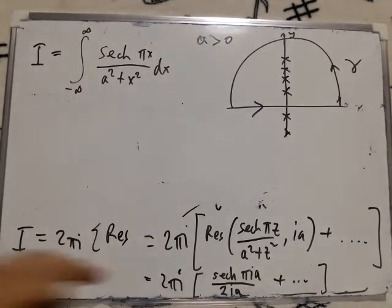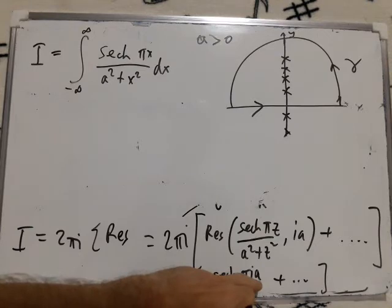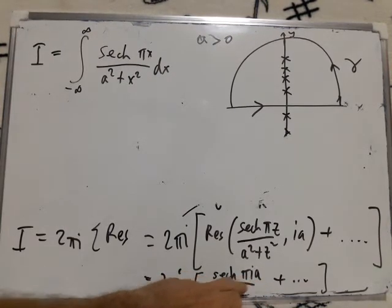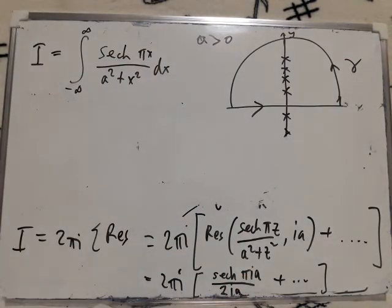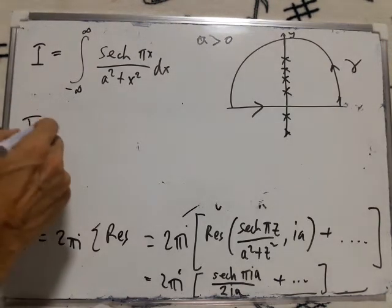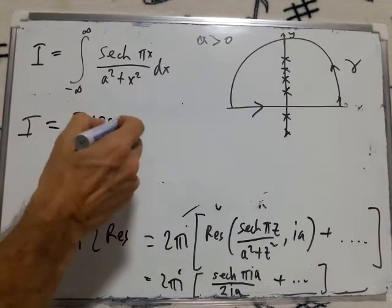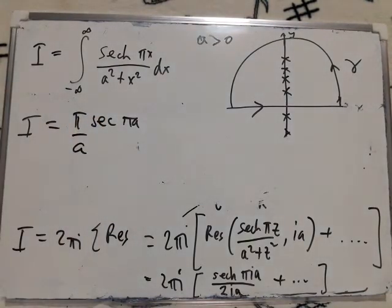Using p over q dashed, we'll end up with sech of πia over 2ia, plus dot dot dot. So the two i cancels with this 2i here. Sech of πia is the same as one over cosh πia, and cosh of πia is just cos of πa. So actually sech of πia is just sec πa. So we end up with π sec πa over a, and then the dot dot dot.